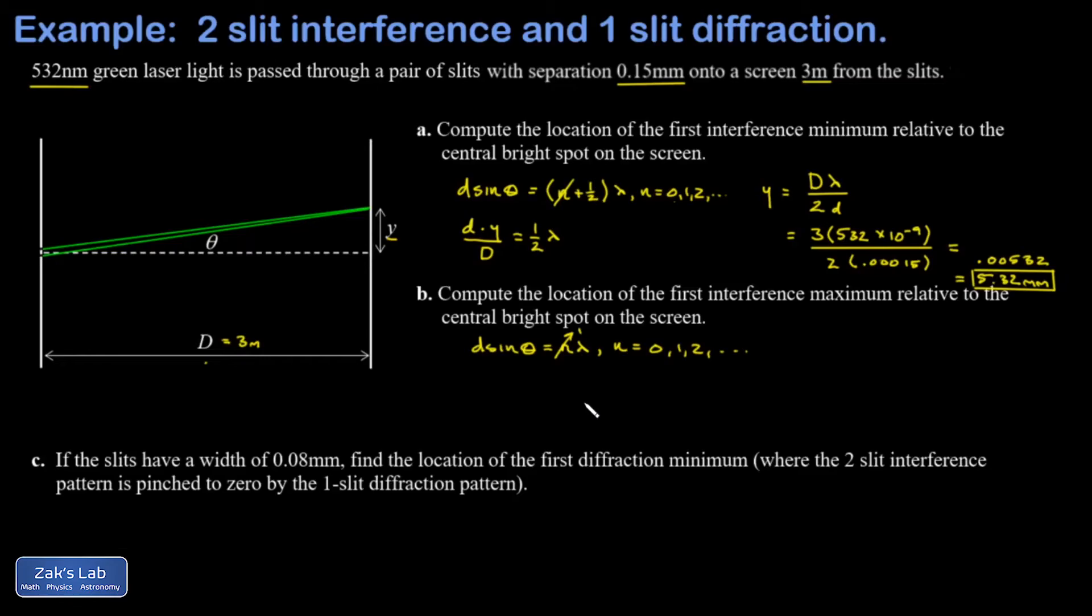So we get little d y over big D equals λ, and we solve for y again. And we sub in the values for all of these variables and get 0.106 meters, which could be written as 10.6 millimeters.